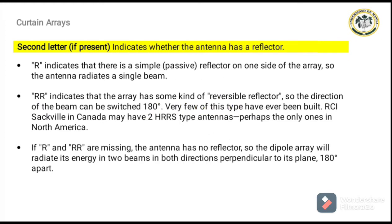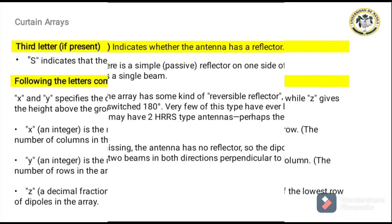The second letter indicates whether the antenna has a reflector. The letter R means that one side of an array has a clear passive reflector, allowing the antenna to radiate a single beam. The letter R also denotes that the array has a reversible reflector, which allows the beam path to be shifted 180 degrees. Very few of this type have ever been built; Canada may have two HRRS type antennas, perhaps the only ones in North America. If R is absent, the dipole array will radiate its energy into 180-degree perpendicular beams in both directions perpendicular to its plane.